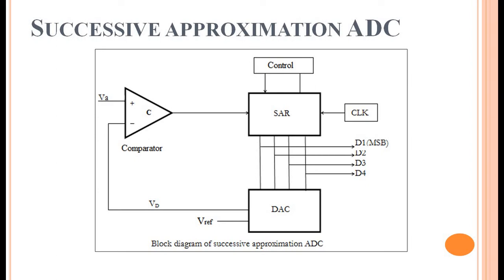Resolution is again dependent on the number of bits used. Here, for simplification, we have gone for 4 bits while studying the working of this A to D converter. Higher number of bits will create more complexity for understanding, so we are going for the simpler 4-bit A to D converter first, and then we will go for higher resolution successive approximation ADCs.